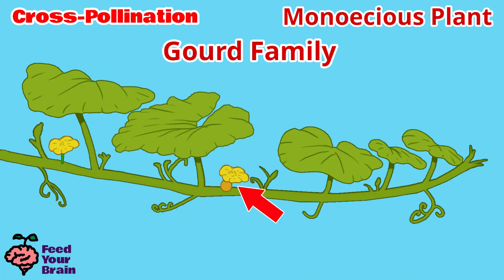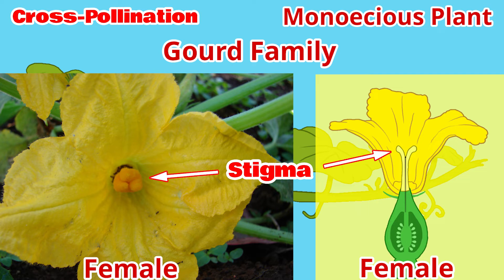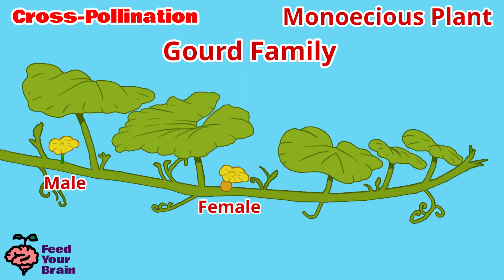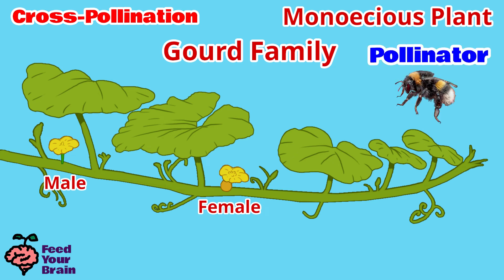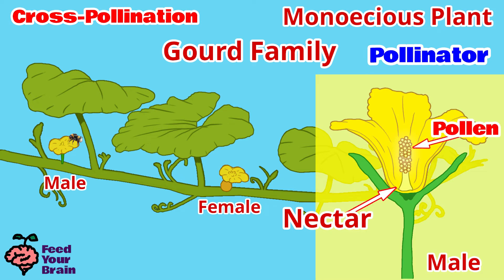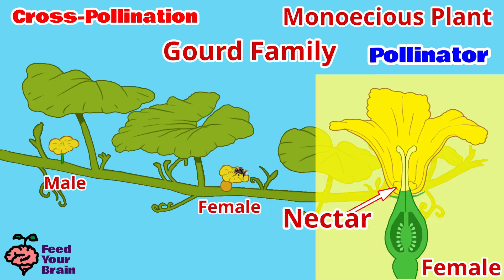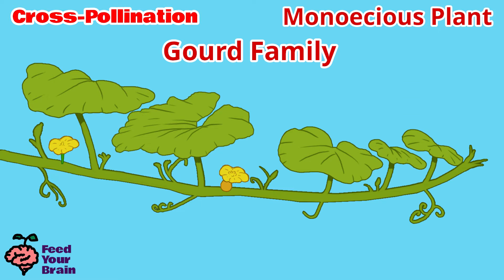To identify the female flower, there are also two features: first, you will see the stigma is spread out and has multiple parts. Second, you'll see the bulge of the ovary below the petals. For the female flower to be pollinated, a pollinator such as a bee needs to first land on the male flower, feed off its nectar, and get pollen from the anther stuck to its body. Then the pollinator's next stop is the female flower, where pollen stuck to the bee's body comes off and sticks to the female flower's stigma. After successful pollination, the fruit swells and grows.